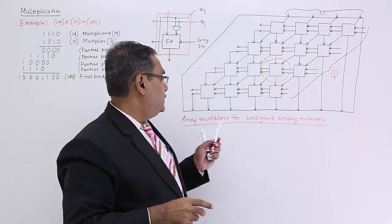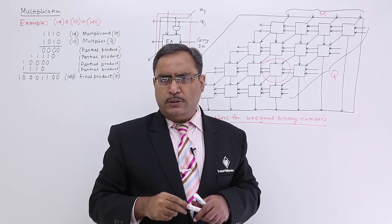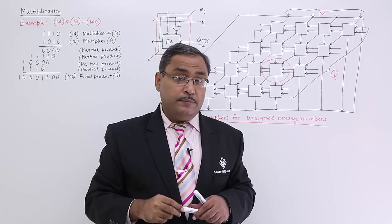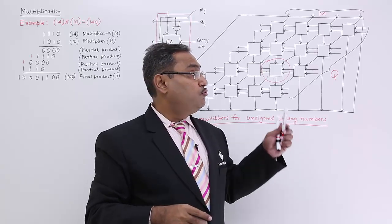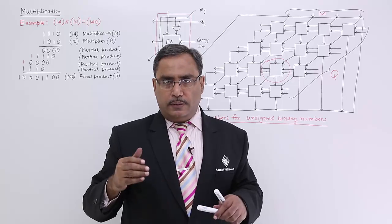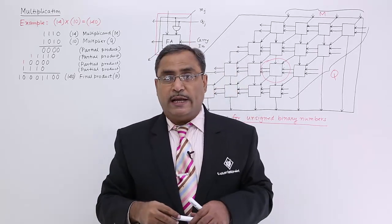So this is known as array multipliers for unsigned binary numbers. I know that to draw the circuits in the exam copy, it will take some time. But sometimes these questions come as a short note or in the broad questions also. You should have to draw the circuit and then go for the explanation. I think you have got the idea what I'm trying to share here. Thanks for watching.